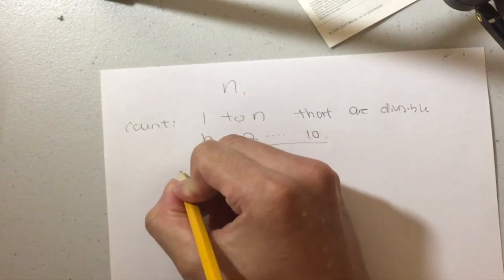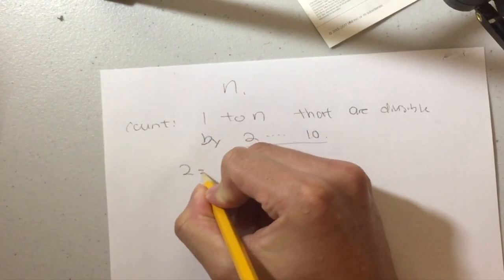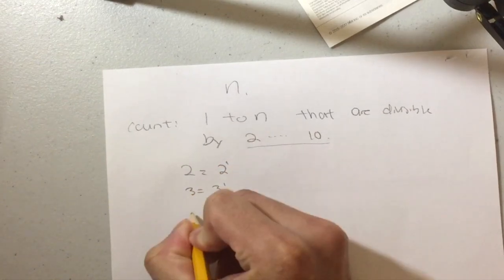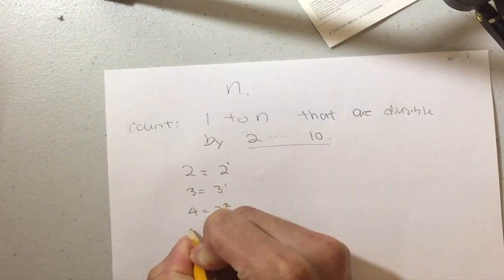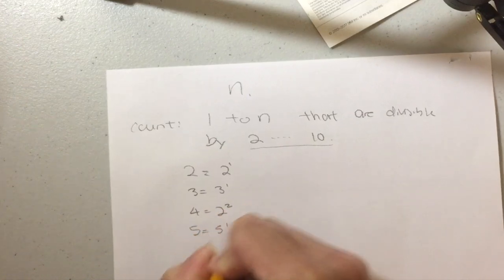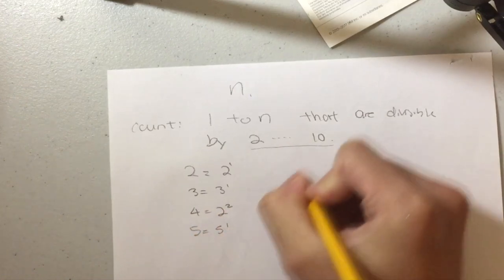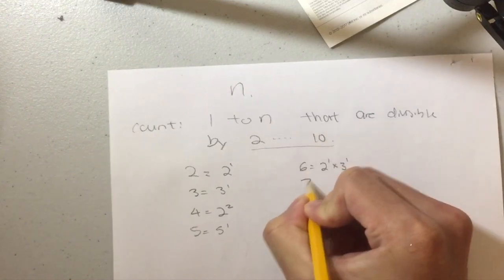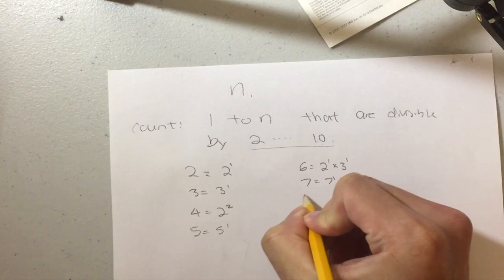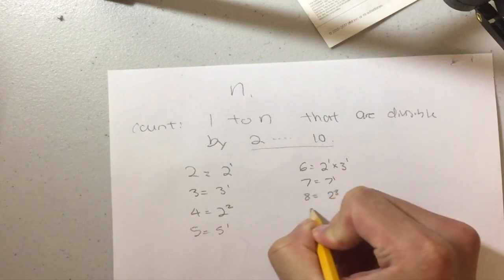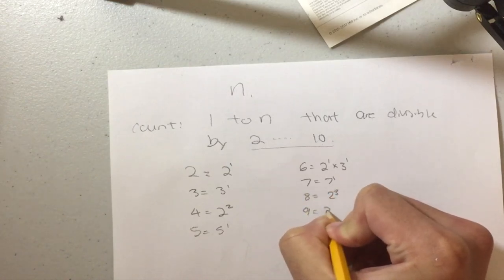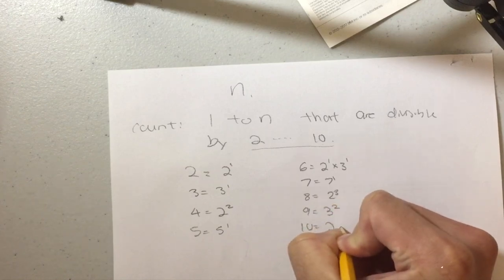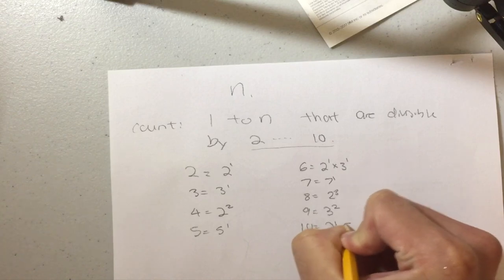Okay, so let's just list out the numbers. 2 = 2^1, 3 = 3^1, 4 = 2^2, 5 = 5^1, 6 = 2^1 × 3^1, 7 = 7^1, 8 = 2^3, 9 = 3^2.